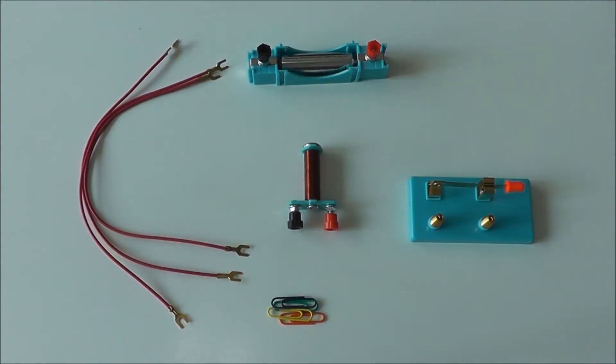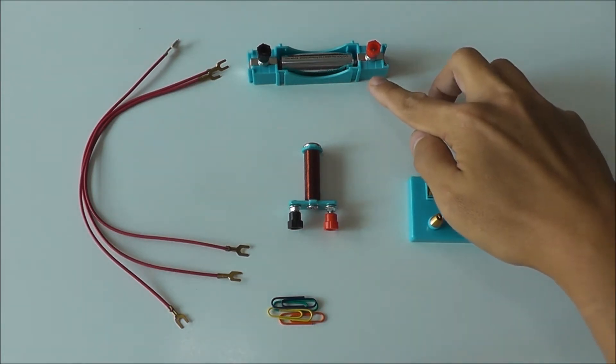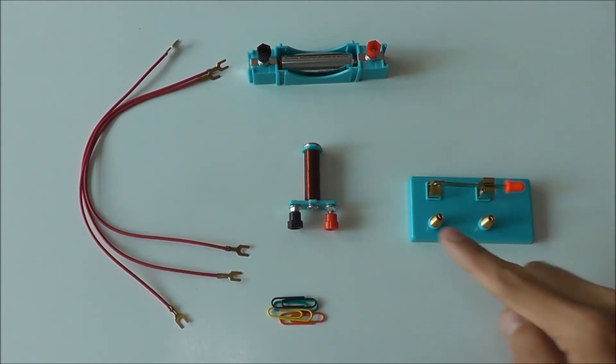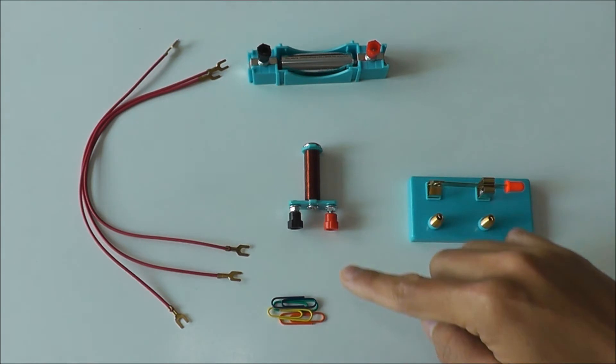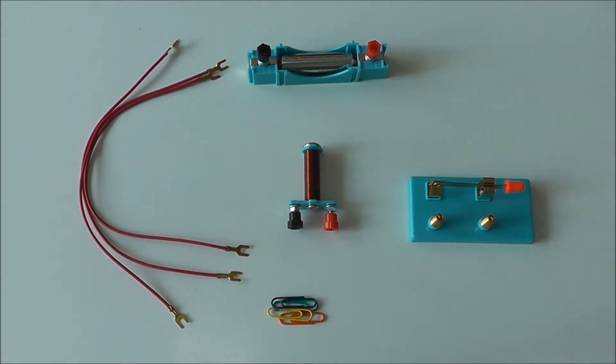In this lesson, we're going to learn how to connect an electromagnet circuit. These are the apparatus that we require: a battery holder with a battery, a switch, an electromagnet, three wires, and some paper clips. Please take note, the paper clips are not provided in the electrical set, so you can just use your own for this activity.